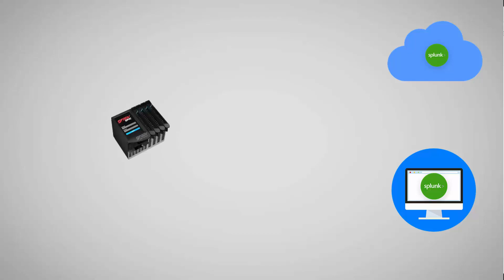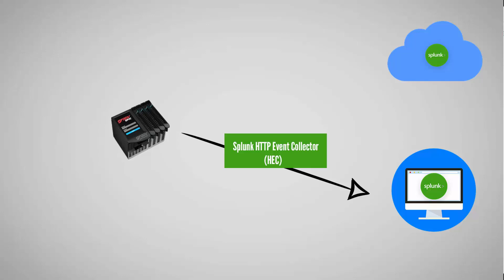In this demo, we're going to collect data from our programmable controller and send it to a Splunk instance running on my machine. How do we actually get data into Splunk? There are many ways to do it, but in our case we're going to use Splunk's HTTP Event Collector, otherwise known as HEC. HEC allows us to send data from our controller via HTTP directly into a Splunk instance on my PC.